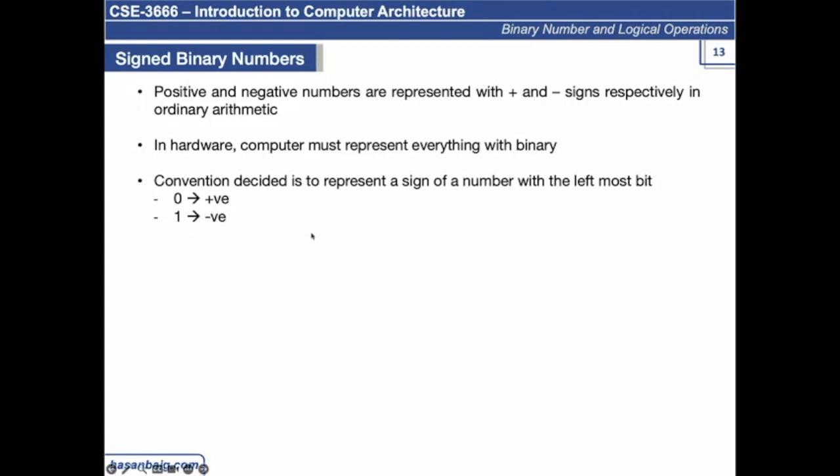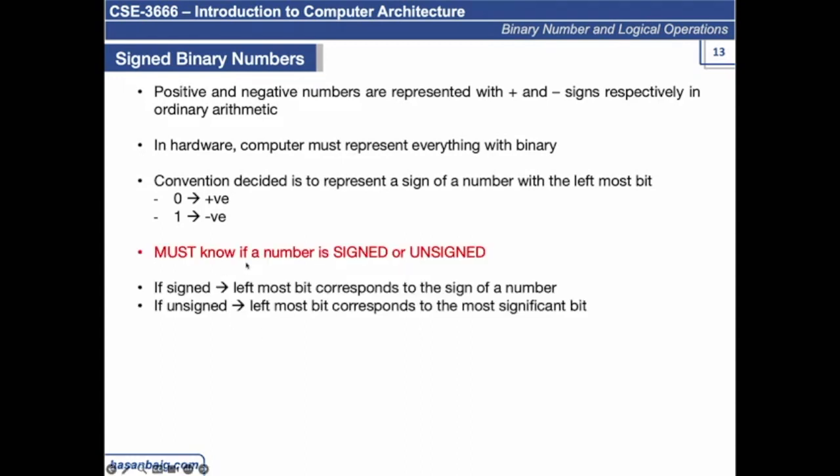So zero, this is a convention. Zero corresponds to a positive value and then leftmost one corresponds to a negative value. You must know whether the number is a signed number or unsigned number. If signed, the leftmost bit signifies it's a positive number. Zero corresponds to positive and one corresponds to negative.